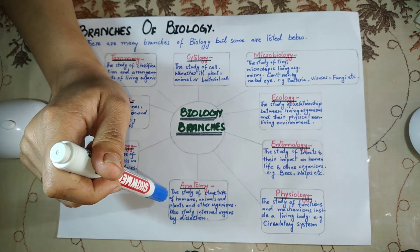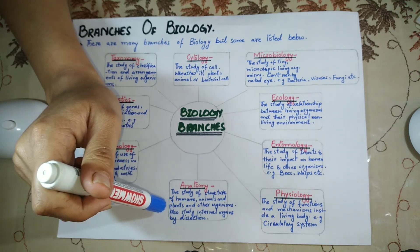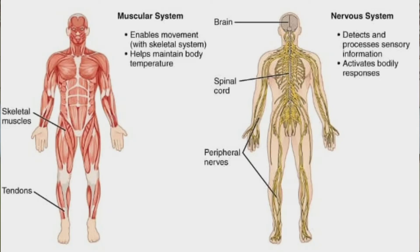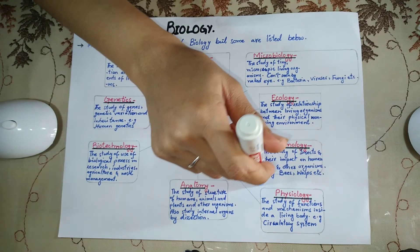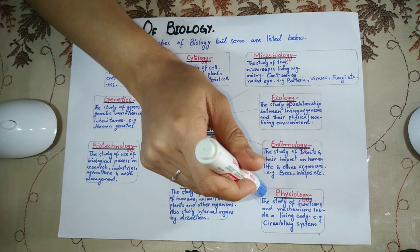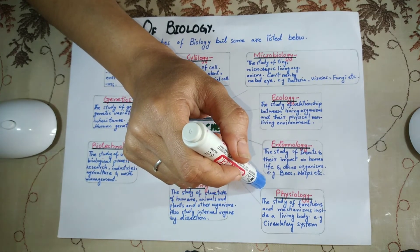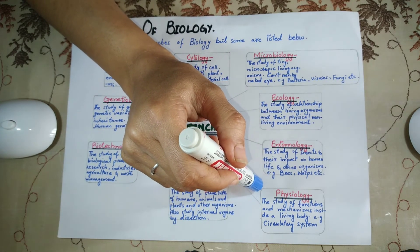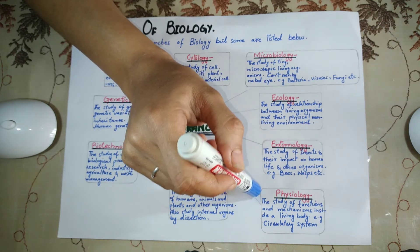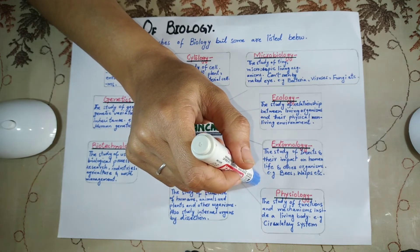Physiology is also a combination of two Greek words: 'physio' and 'logy'. Physio means functions and mechanism, and logy means to study. The study of the function and mechanism of a living body or living system is called physiology. Examples include the circulatory system, digestive system, and nervous system.